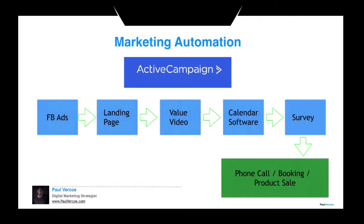Marketing automation software is like having your own executive assistant that does all the work for you on autopilot once it is set up correctly. The marketing automation software can do things like send out a series of emails or SMS messages over a scheduled time span, so that you never lose track of your clients and you keep them warm — so when they're ready to buy, the first person they think of is you.